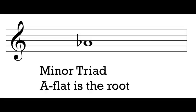Let's try doing one together. A lot of the time our triad writing exercises are going to look like this: we're going to know what quality we want the chord to be. In this case, we want to write a minor triad, and we're going to have a member of that chord — here, we're told that Ab is the root. I like to start by filling in the notes in their proper spaces so we've got stacked thirds. If Ab is the root, we need some type of C a third above, and some type of E a third above that C.